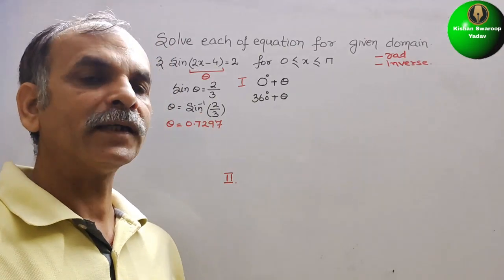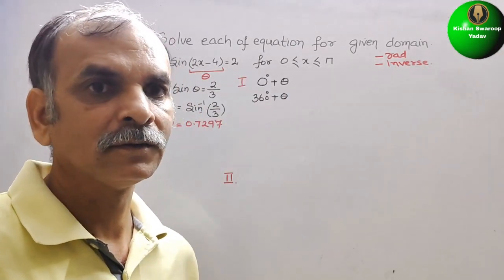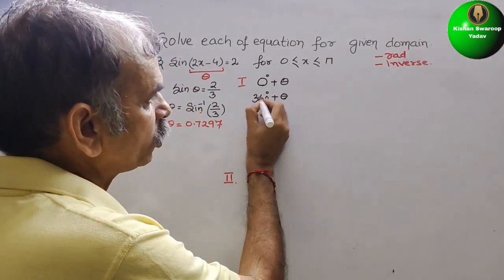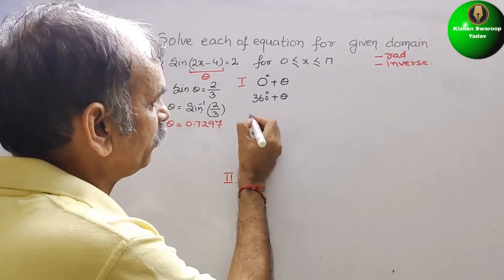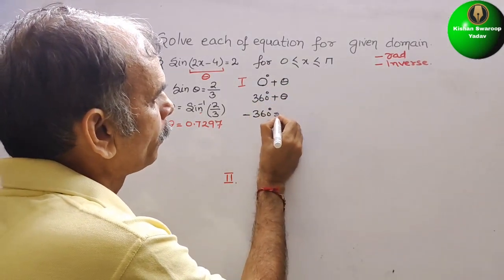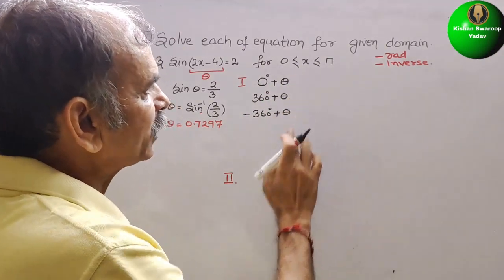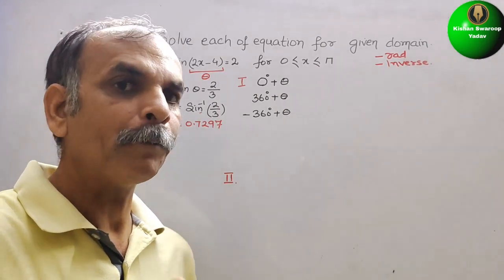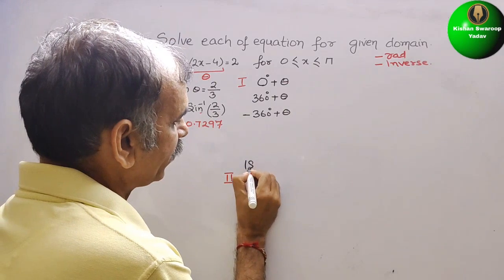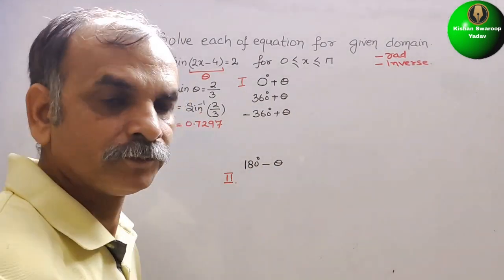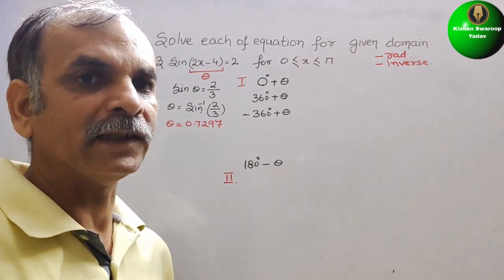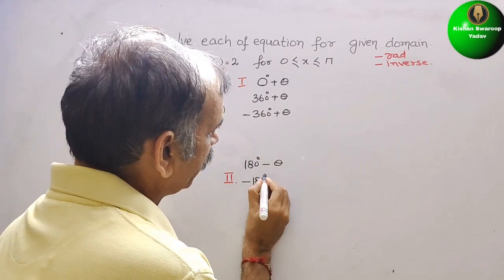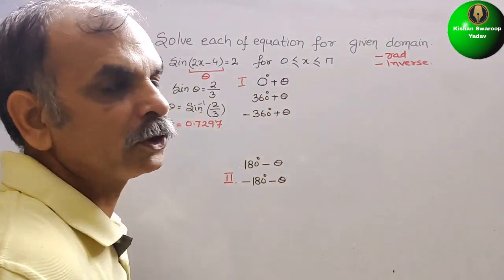If you go clockwise, it will be −360° + θ. These come under the 1st quadrant cases. For the 2nd quadrant, the solution is 180° − θ. If we go anti-clockwise, it will be −180° − θ.